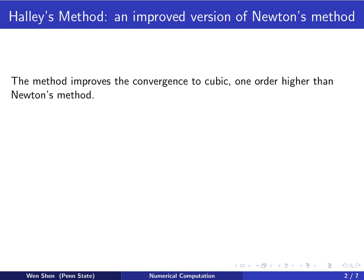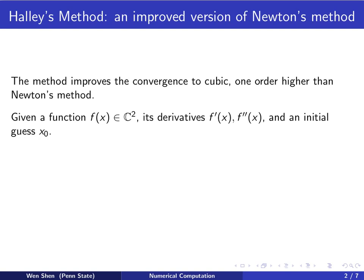And the higher convergence is only achieved with more assumptions on the function. So let's consider a given function f, which shall be in C², that means the first derivative and the second derivative are both continuous functions. And we require them to be given also. And we have initial guess x₀.